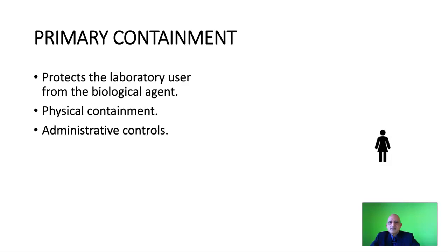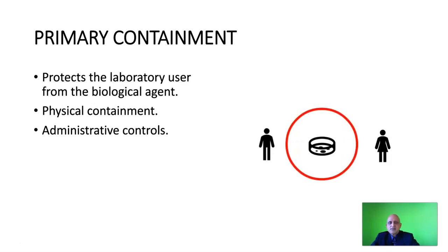Primary containment refers to controls which protect the laboratory user from the biological agent. These can be in the form of physical containment such as masks, gloves, and aprons, or in the form of administrative controls such as standard operating procedures. When laboratory users interact with a biological agent — such as a bacterium growing in a petri dish — primary containment protects them through administrative controls, engineering controls such as an appropriate biological safety cabinet, or personal protective equipment such as gloves and masks.